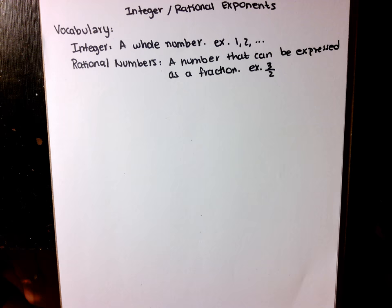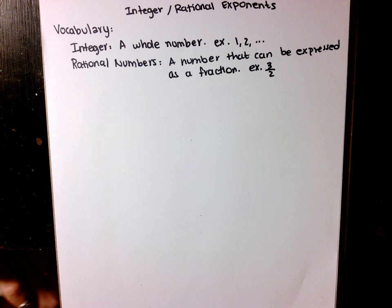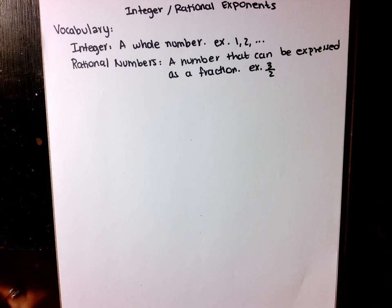Welcome back. Today I'm making my video a little different and I sound a little different because I'm still sick. Today is going to be integer and rational exponents. First thing we're going to do is talk about vocabulary — this is something you should already know but in case you forgot. An integer is just a whole number like one, two, three, four, five, and a rational number is a number that can be expressed as a fraction, for example three over two. So today we're going to be focusing on those different types of exponents.